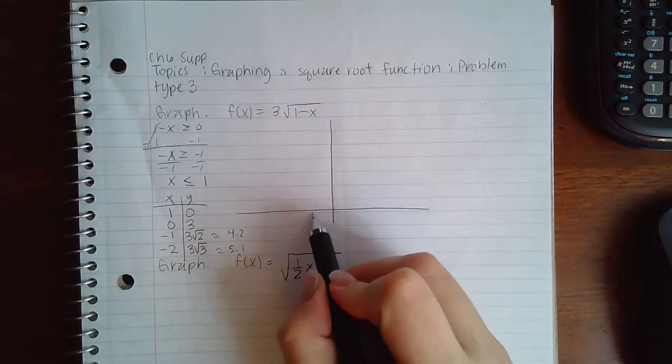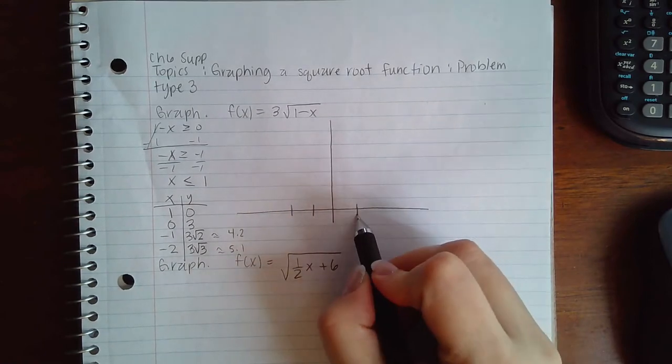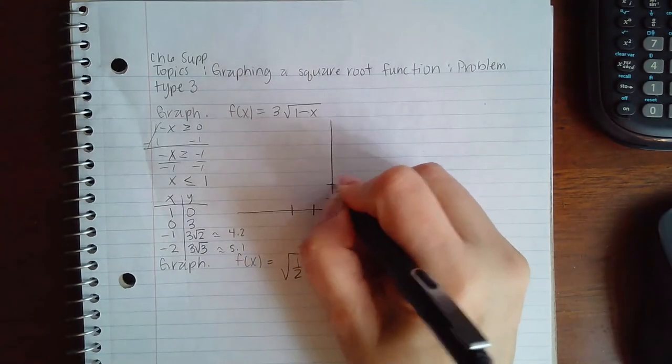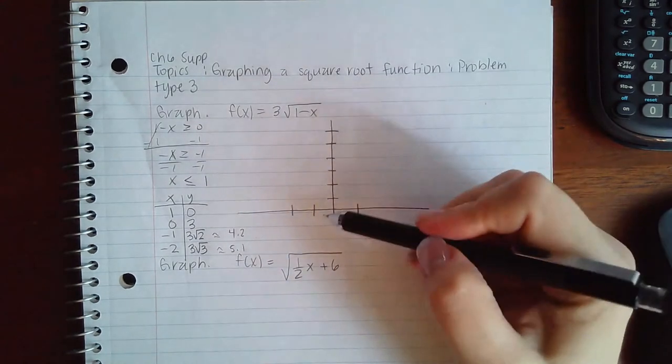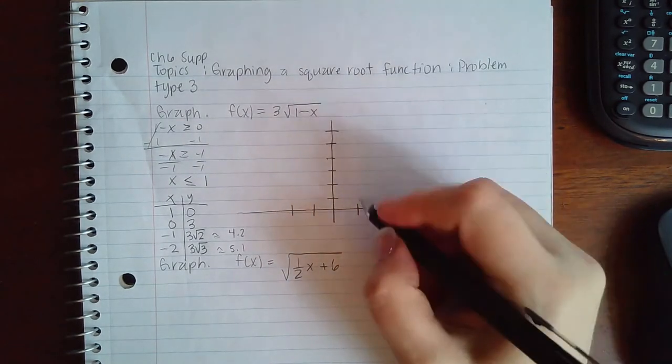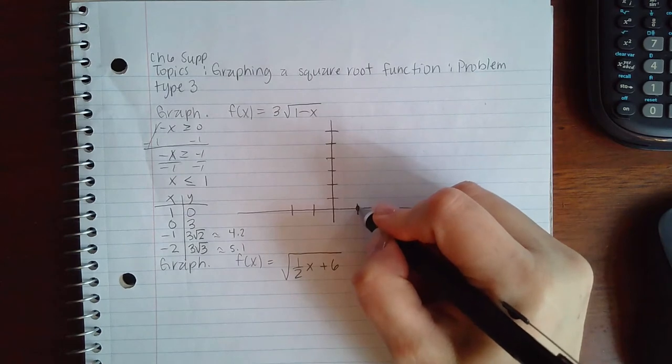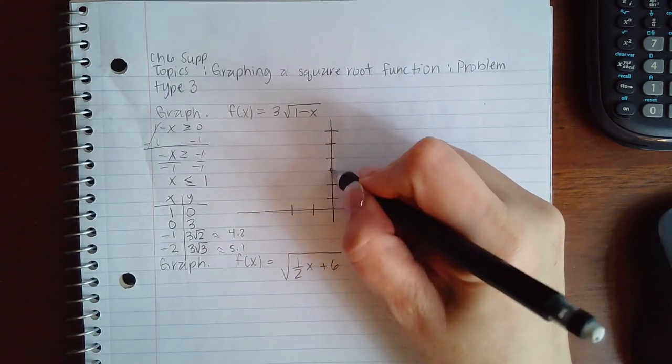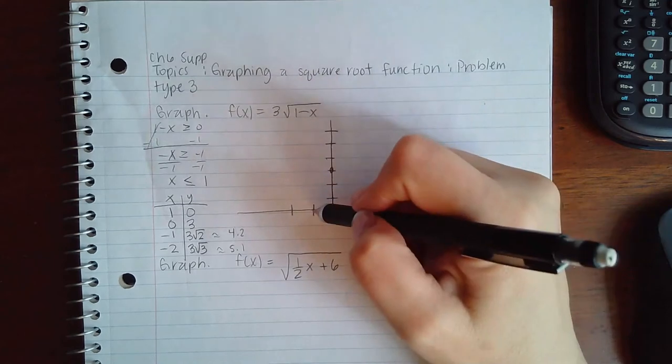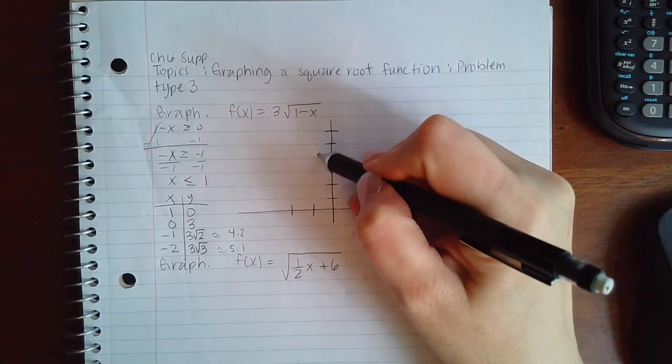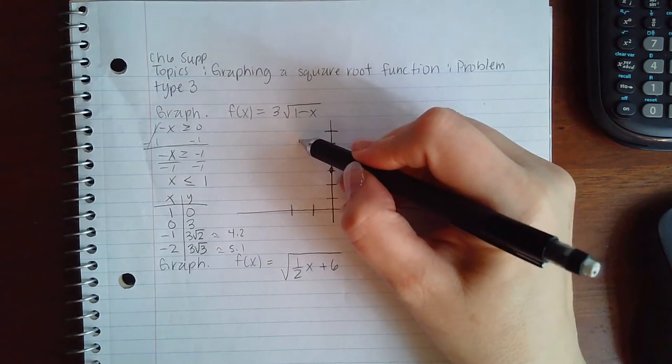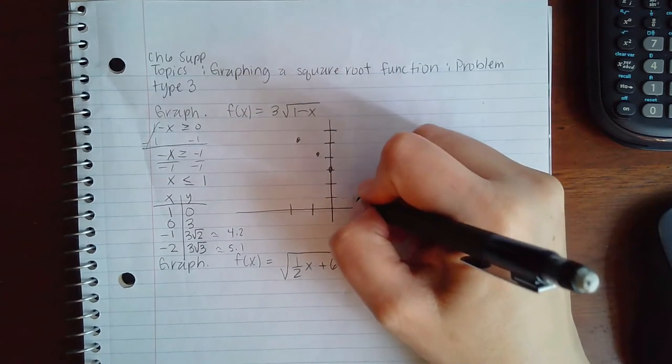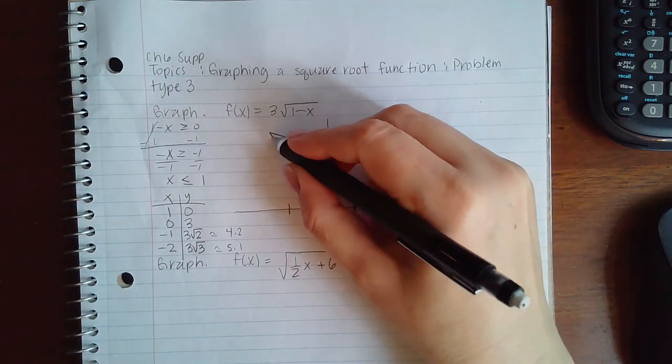So we have 1 and 0, that's where I start. Then 0 and 3, then negative 1 and 4.2, and then negative 2 and 5.1. And so then the graph is going in this direction.